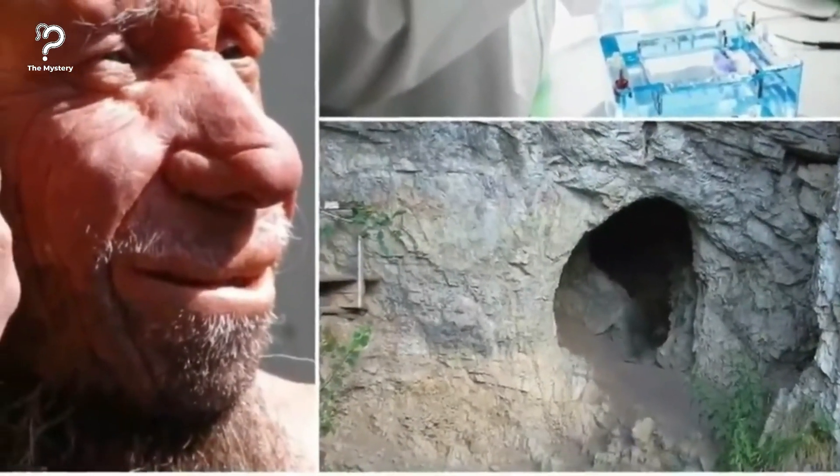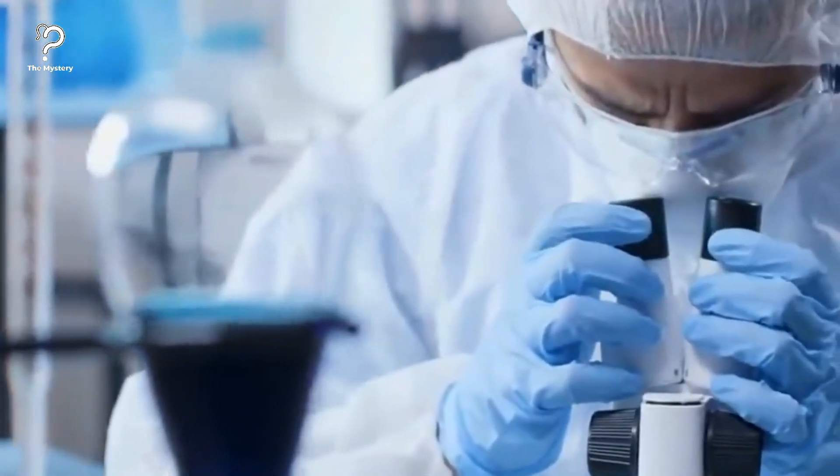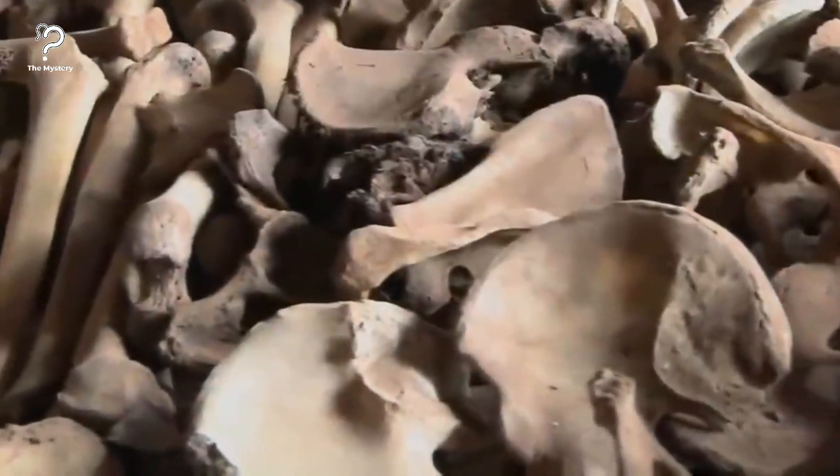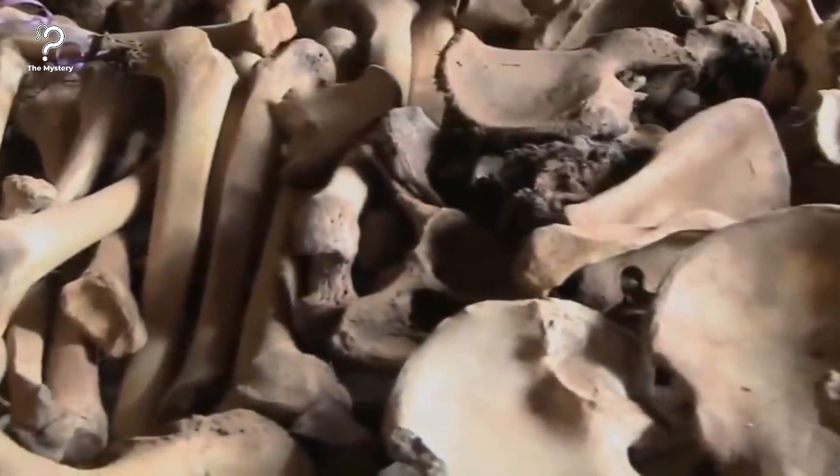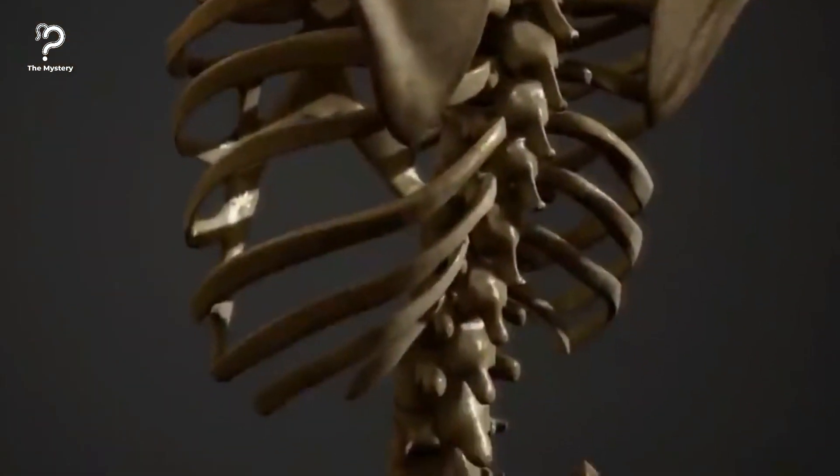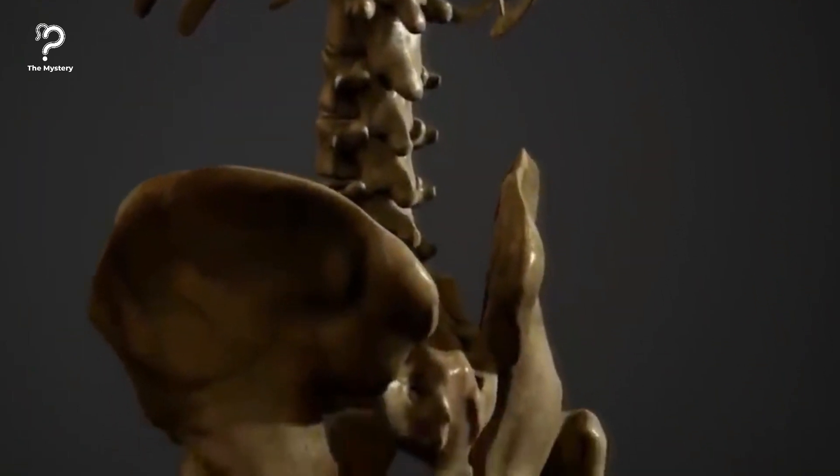At first, she suspects that an error has been made, but soon the truth becomes apparent. These remains come from a girl whose parents were from two entirely different species. Although scientists have long suspected that interbreeding between ancient humans occurred, the chances of finding a first-generation offspring were considered slim. But then, researchers in a cave in Siberia stumbled upon a tiny fragment of bone. Initially, they didn't even realize that it came from a hominin - a catch-all term which just means all the species regarded as human. But then an incredible story began to unfold.